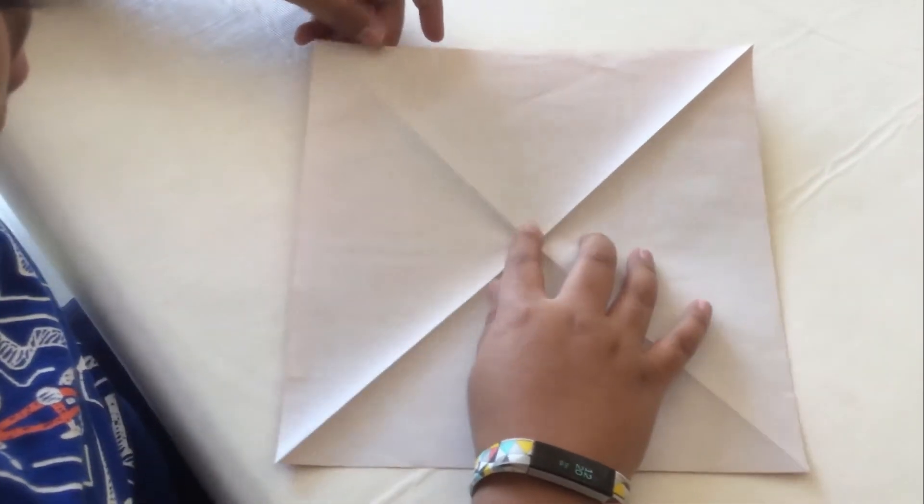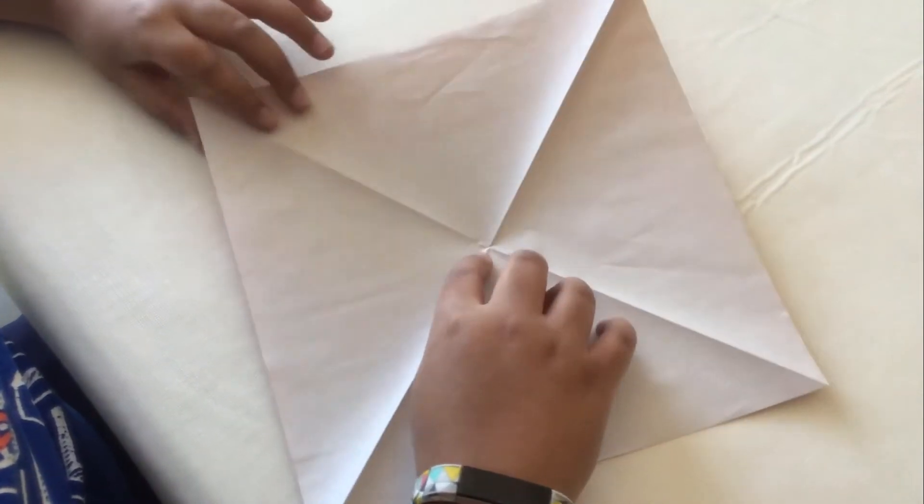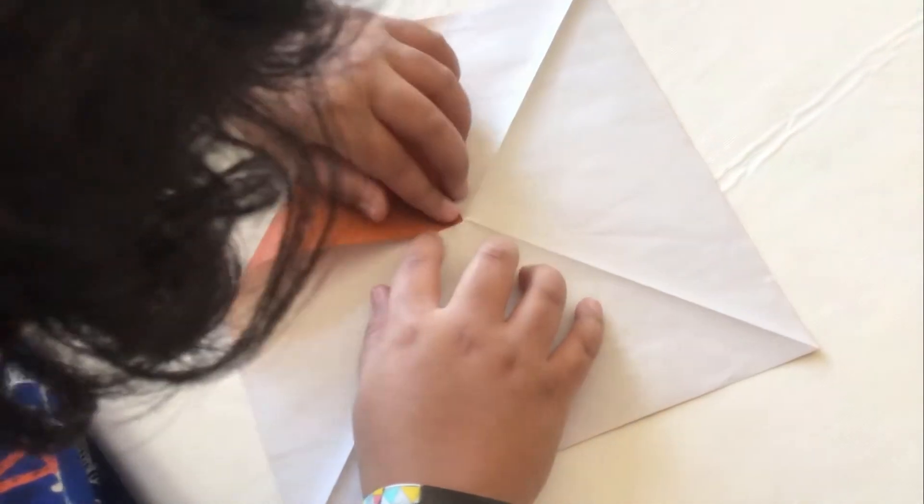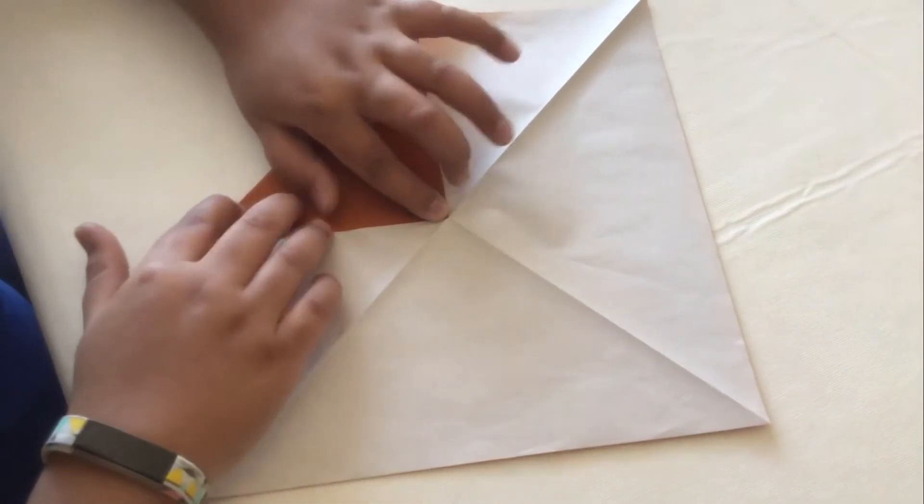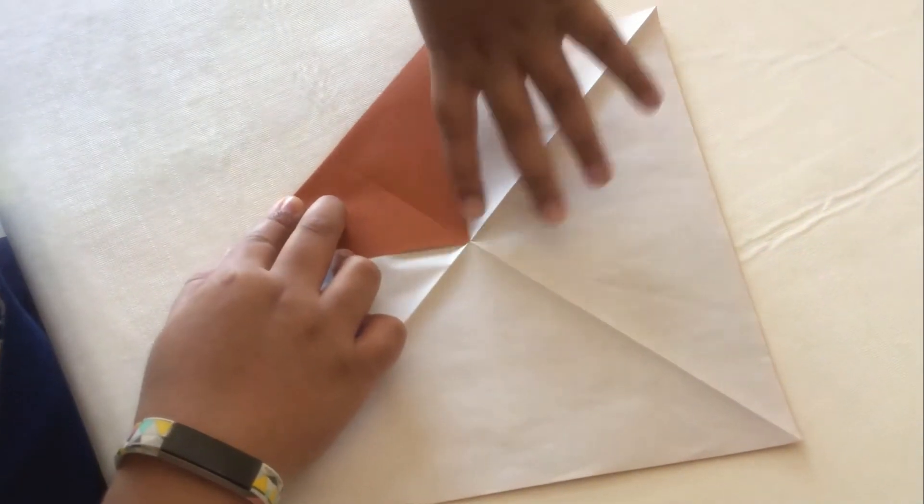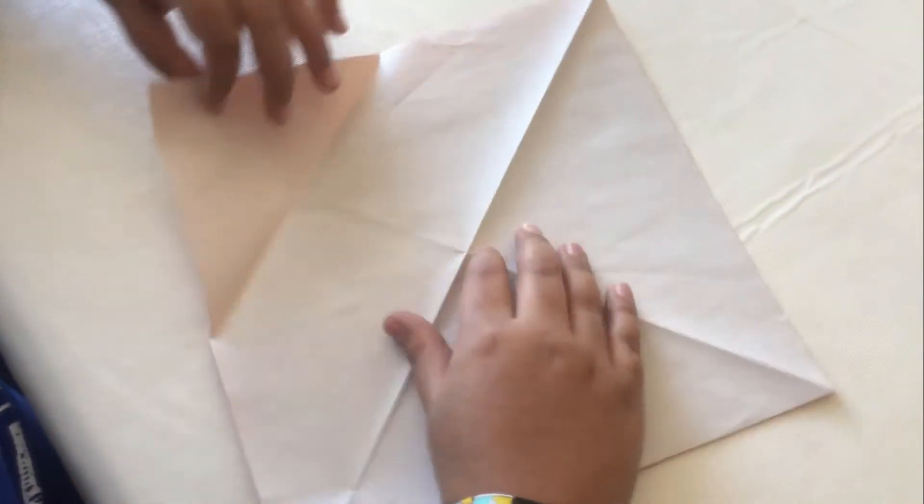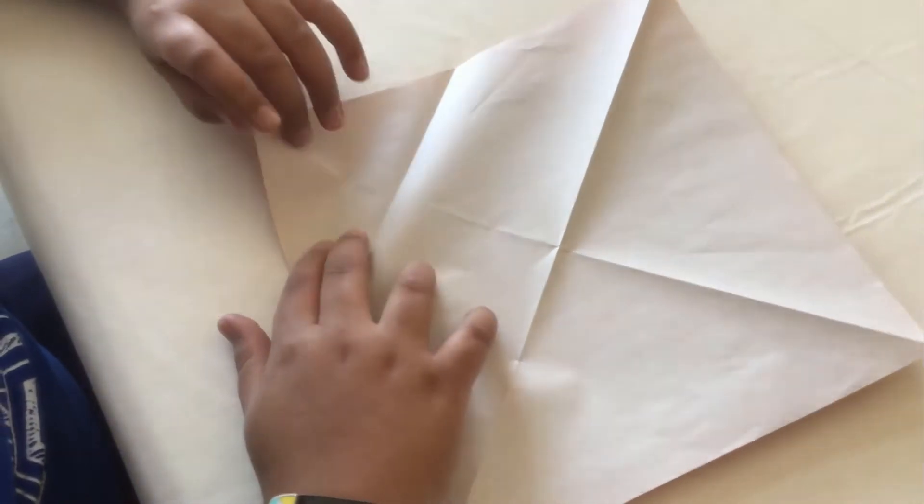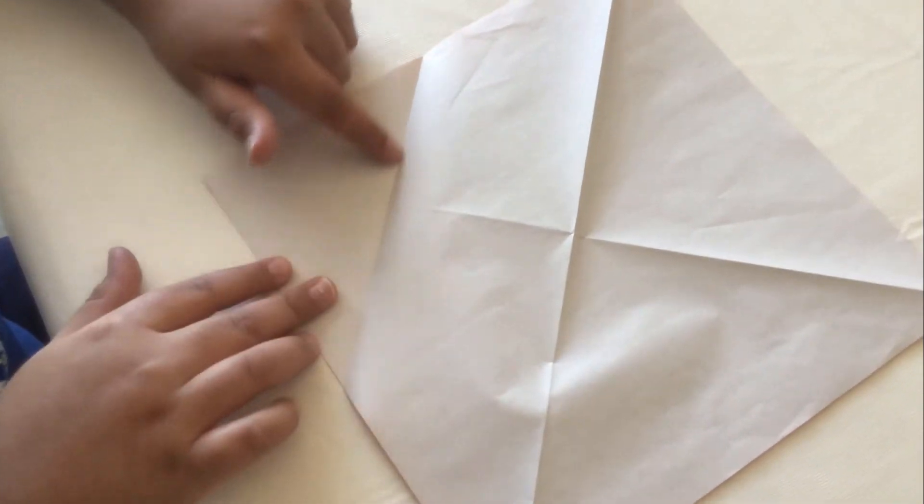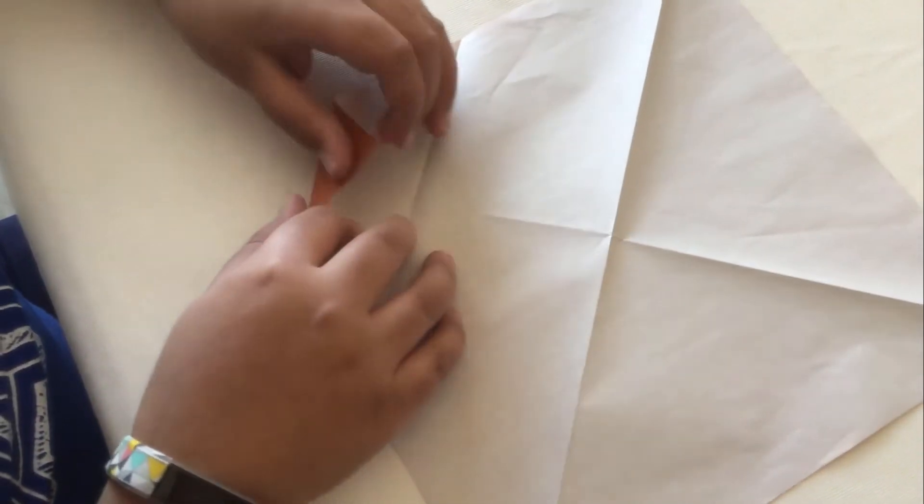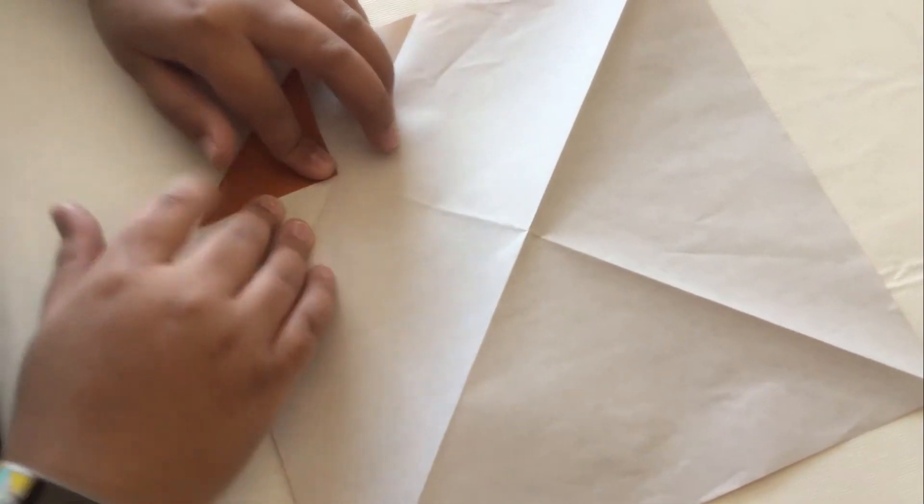Then turn over like this. And take this corner and match it to the middle. Like that. Fold strongly. Unfold. And take the same corner. Match it to this new crease.